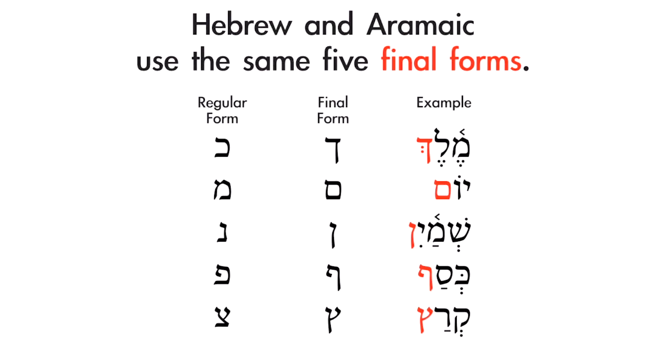The regular form is used at the beginning or anywhere in the middle of a word. The final form is the form of that particular consonant used as the last letter in any word. With a language written closely together and sometimes without spaces, having final forms would have been very helpful because they served as word dividers. Those features still carry over today even though we use spaces in our text, and so you must be able to recognize and write out these five final forms.